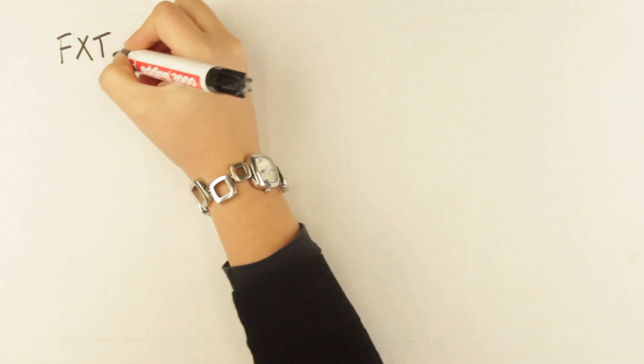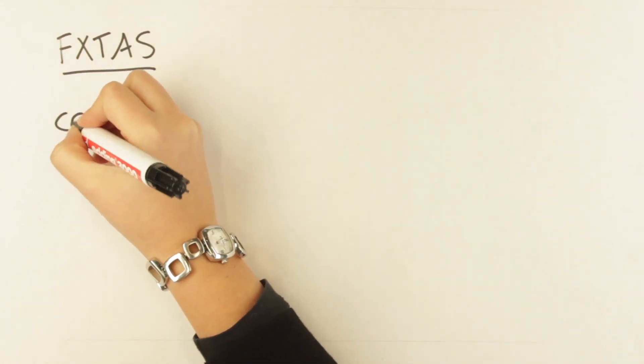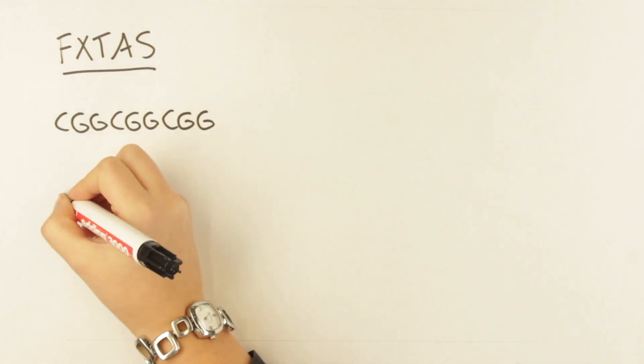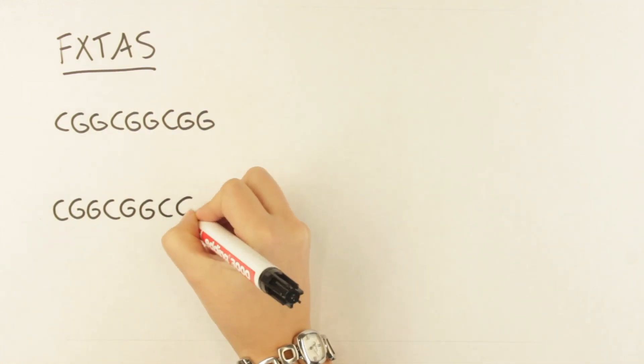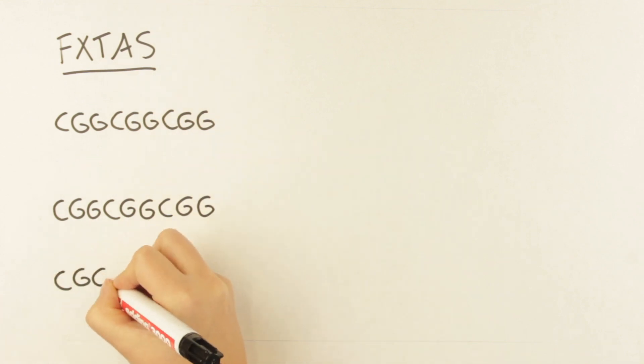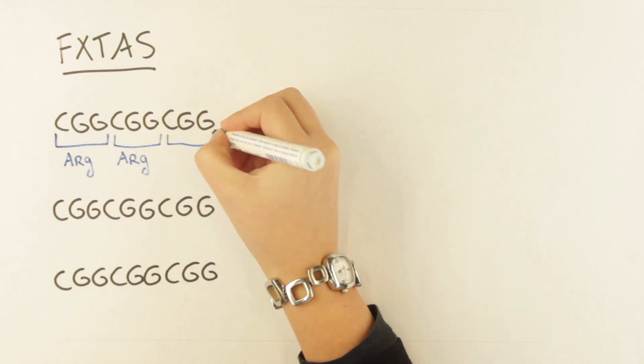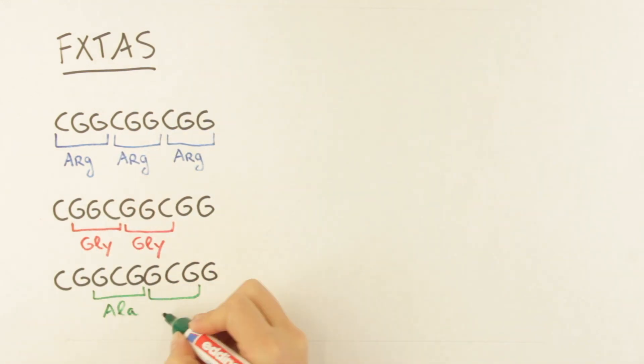Because the ribosome has different starting points, the repeat can be translated in different proteins. Depending on the reading frame for the CGG repeat in FXTAS, translation can result in several polypeptides, namely polyarginine, polyglycine, and polyalanine.